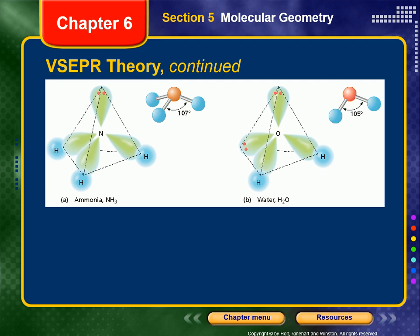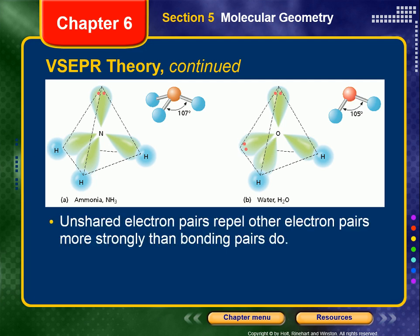With H2O, there are four areas of electron density — four electron domains — and because electrons repel one another, they spread out into a tetrahedral orientation. But when we talk about shape, referring only to the atoms, the shape of water is bent, or angular. Unshared electron pairs repel each other more strongly than bonding pairs do, which is why bond angles in ammonia and water are somewhat less than the anticipated 109.5-degree bond angles of a perfectly tetrahedral molecule.